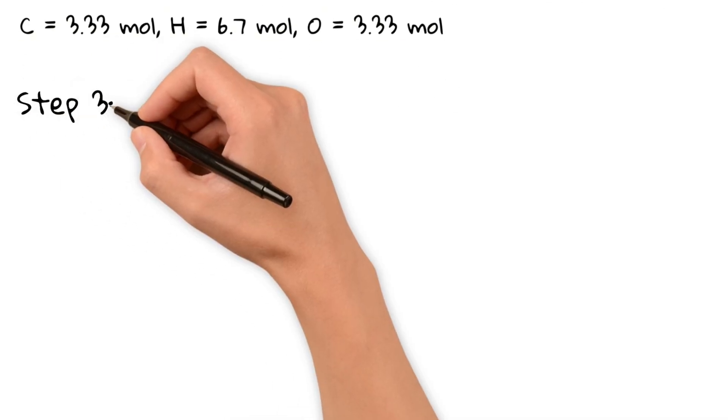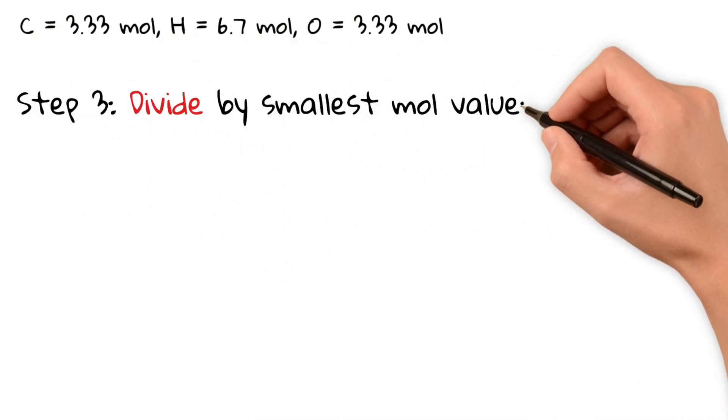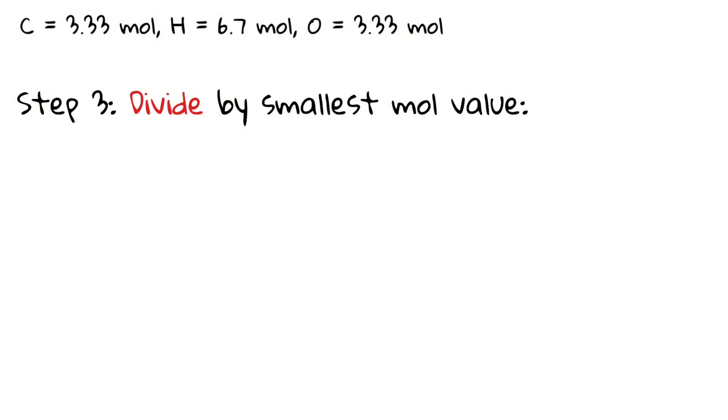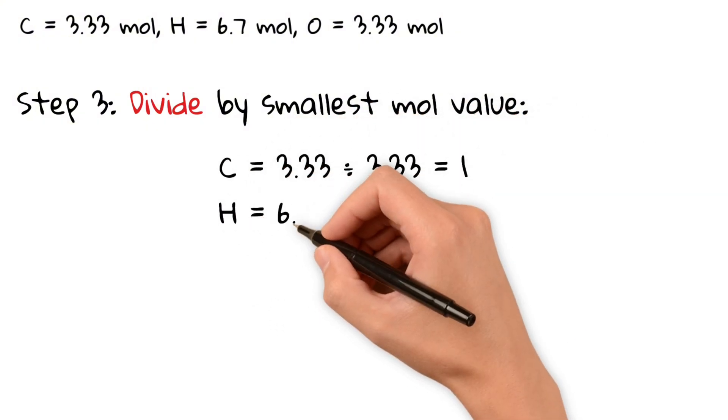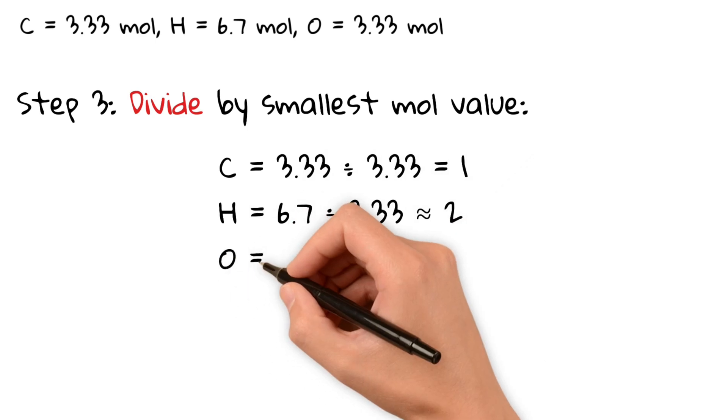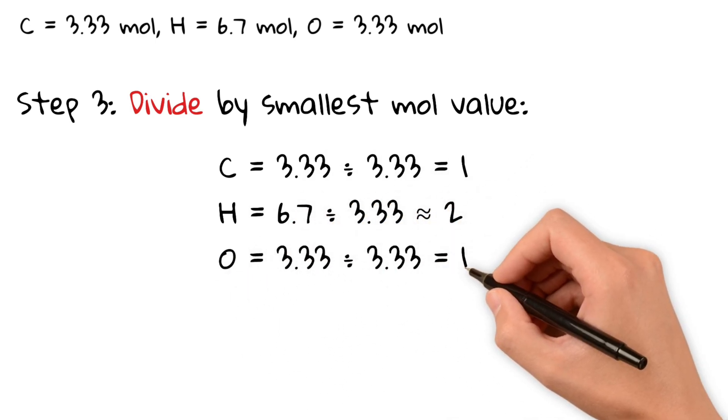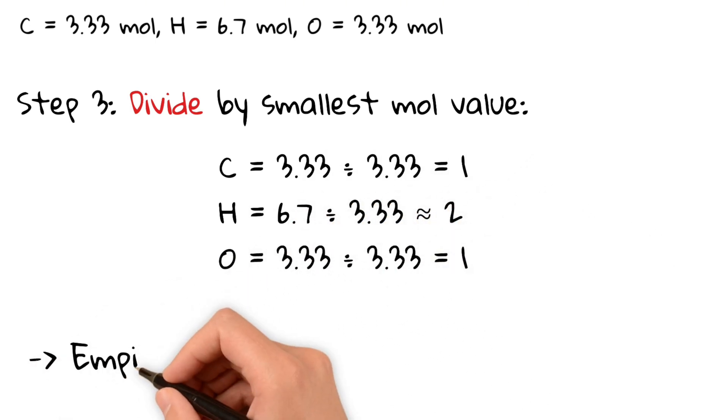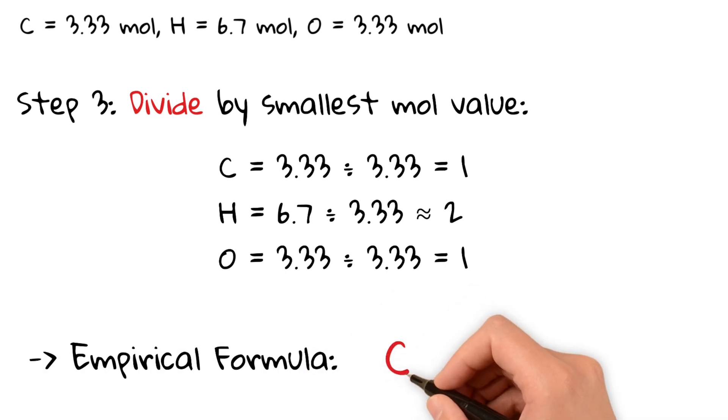Now we simply divide each mole value by the smallest mole value, which is 3.33. This gives us the following ratio: one carbon, two hydrogen, and one oxygen. So therefore, our empirical formula is CH2O.